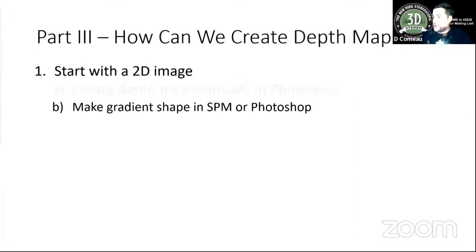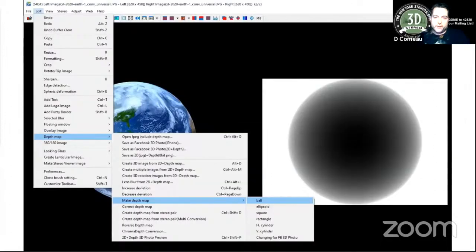So another way to create a depth map is to make a gradient shape in Stereo Photo Maker or Photoshop or some other image program. For example, that earth depth map I made earlier was done using Stereo Photo Maker. So back in Stereo Photo Maker, I went to depth map, make depth map, and Stereo Photo Maker just gives me some different things like a cylinder or a rectangle if I wanted to do a pyramid or something, or a ball. So it makes it easy if you just have some kind of a basketball or a globe or something like that to easily make a depth map you can use.